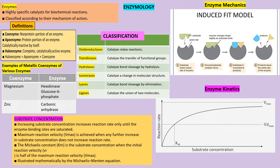An enzyme is made up of a coenzyme and an apoenzyme. The coenzyme is the non-protein part, the apoenzyme is the protein part, and the holoenzyme is the complete, catalytically active enzyme. For the holoenzyme to be active, both the apoenzyme and coenzyme must bind together.